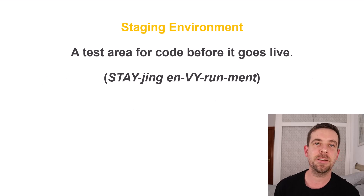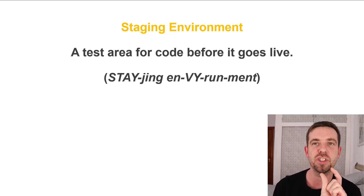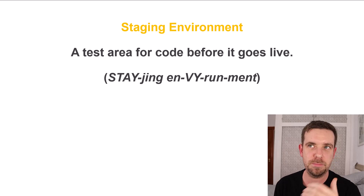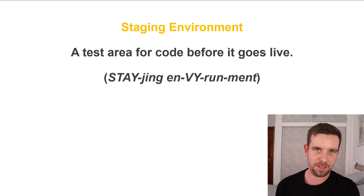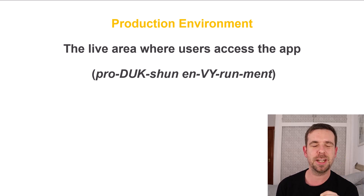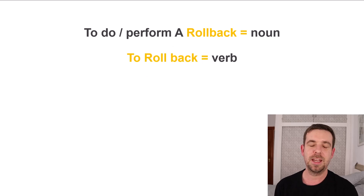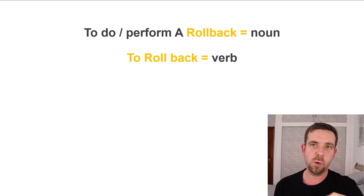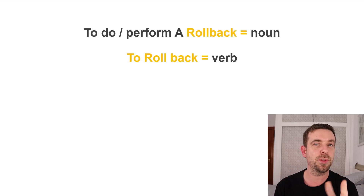Staging environment — go slow: first is stage, with that long A sound. Staging. Staging environment. Production environment: the last syllable is -shun. Environment. And then we have rollback — you can use it as a verb, to roll back, or as a noun, to perform a rollback. You can use both.